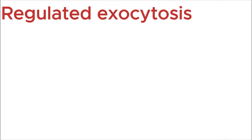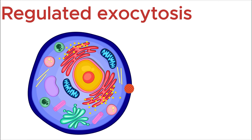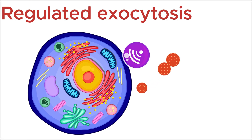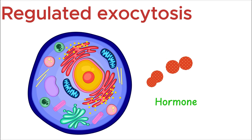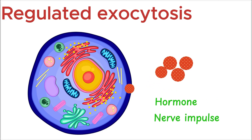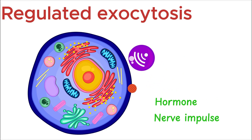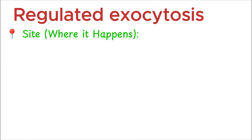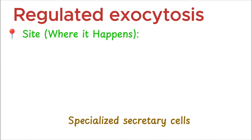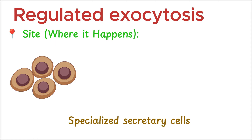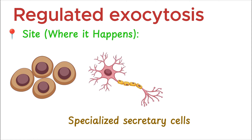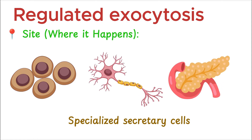The second type is regulated exocytosis — a process where materials are released only when the cell receives a specific signal, like a hormone or nerve impulse. It does not happen all the time; it's triggered when needed. It occurs in specialized secretory cells such as endocrine cells, which release hormones, nerve cells, and pancreatic cells.